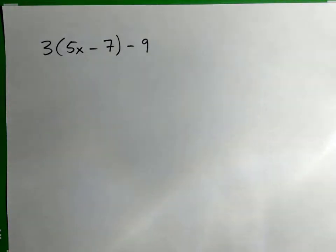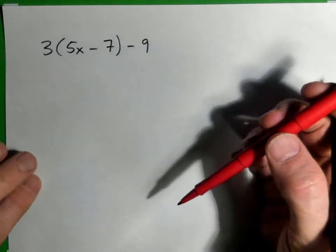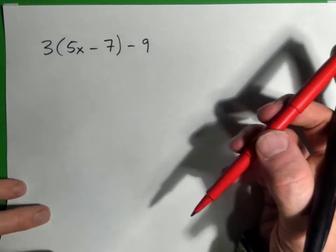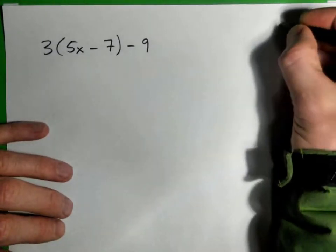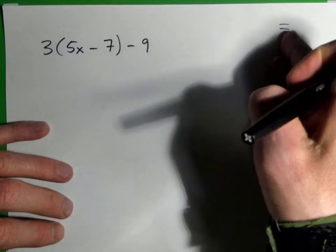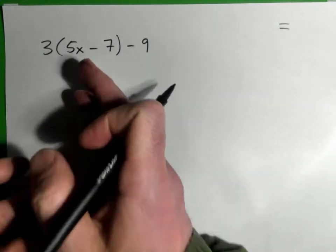Okay, so we got 3 times (5x - 7) then subtract 9. We're trying to simplify this expression. There's no equal sign, so it's not called an equation, it's called an expression. We're not solving for anything, we're just simplifying.